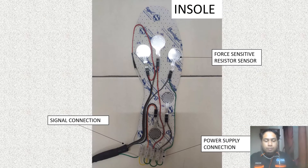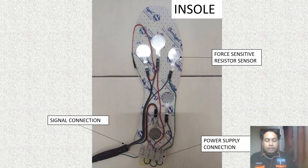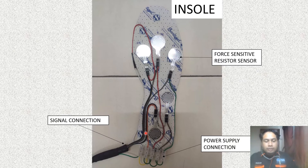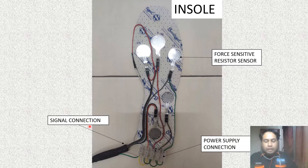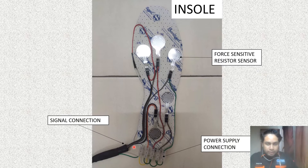This is what it looks like when the FSR sensors are attached above the insole. On the insole, I am using five FSR sensors. Each FSR sensor has two pins: one pin for the signal and another pin for the power supply. I am using a parallel circuit for the power supply.